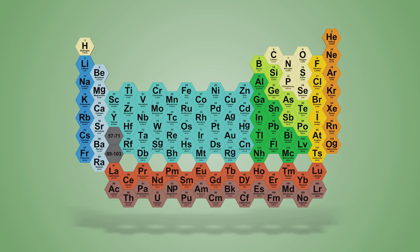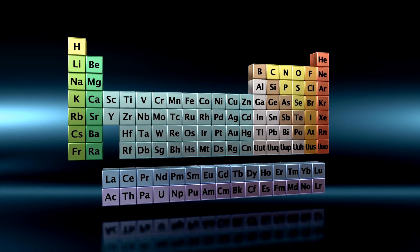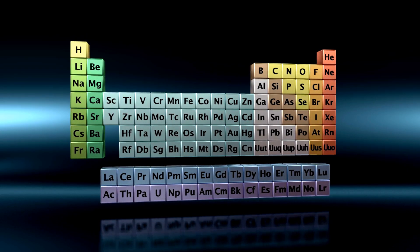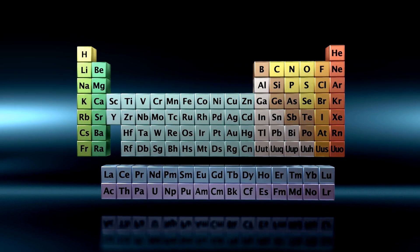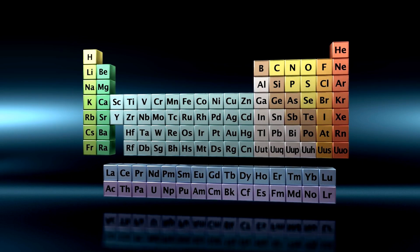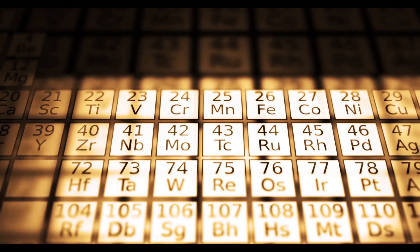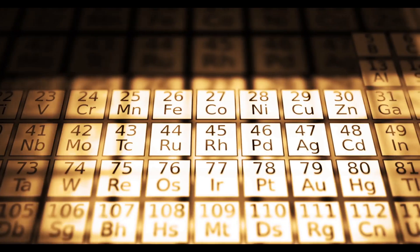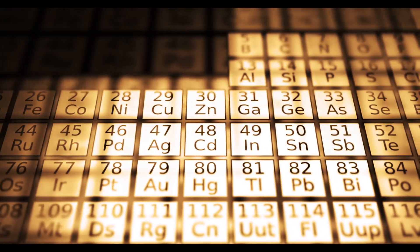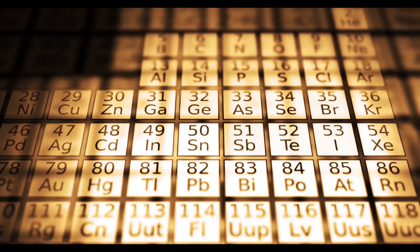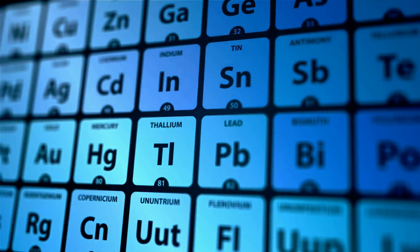He had discovered what he called the periodic law. According to this law, the properties of elements repeat periodically when arranged by atomic weight. This led to the creation of the first version of the periodic table. But Mendeleev didn't stop there — he made bold predictions about the existence and properties of undiscovered elements, leaving gaps in his table for these elements and predicting their atomic weight and characteristics.